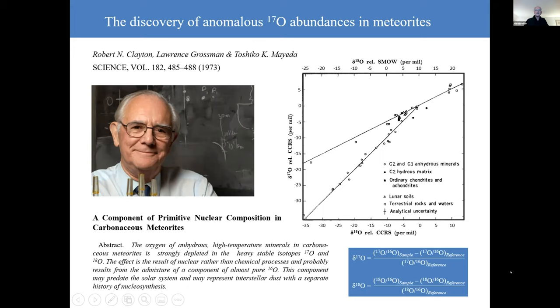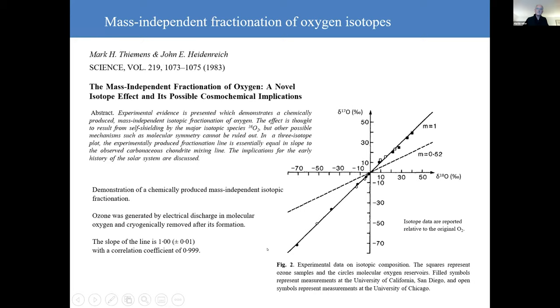The next big paper in this story was published 10 years later when that fractionation line of slope one was reproduced in a chemical reaction in the laboratory by Professor Mark Thiemens and his colleague John Heidenreich. This was the first demonstration of a chemically produced so-called mass independent isotopic fractionation. The reaction involved the generation of ozone from molecular oxygen by electrical discharge. And what we see here is that the ozone is enriched in the minor isotopes and the residual oxygen is depleted in the minor isotopes and the line has a slope of one.